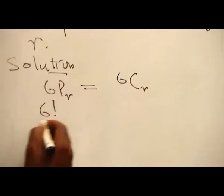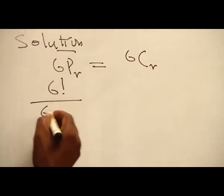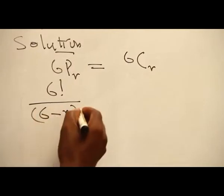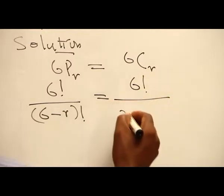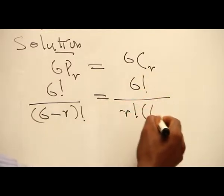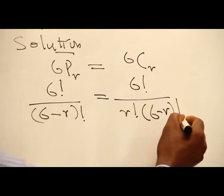This gives us 6 factorial over (6-r) factorial equals 6 factorial over r factorial times (6-r) factorial.